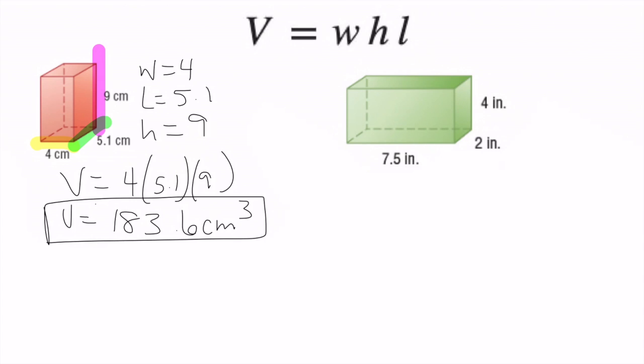Alright. So let's look at this one. We have a width of 2, length of 4, height of 7.5. So width equals 2, length equals 4, height equals 7.5. So we're going to say 2 times 4 times 7.5. And that will give us a volume of 60 inches cubed.